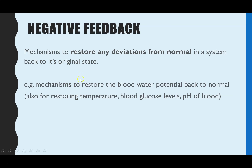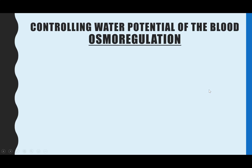That process of restoring back to the normal level is seen in blood glucose levels, the pH of the blood, and what we're going to be looking at today: mechanisms that are put in place to restore the blood water potential back to its normal level. Osmoregulation is the name of the negative feedback mechanisms which control the water potential of the blood to make sure it remains constant.